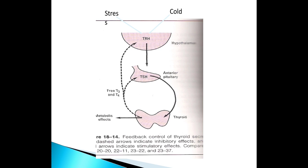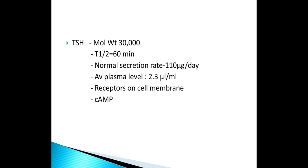TSH is also called thyrotropin. It is a glycoprotein containing 211 amino acid residues secreted by the anterior pituitary gland, with a molecular weight of 28,000 to 30,000 and a half-life of 60 minutes. Normal secretion is around 110 micrograms per day, with a plasma level of 2.3 microunits per mL. It acts on the receptor of the cell membrane, mediated by cyclic AMP as the second messenger.